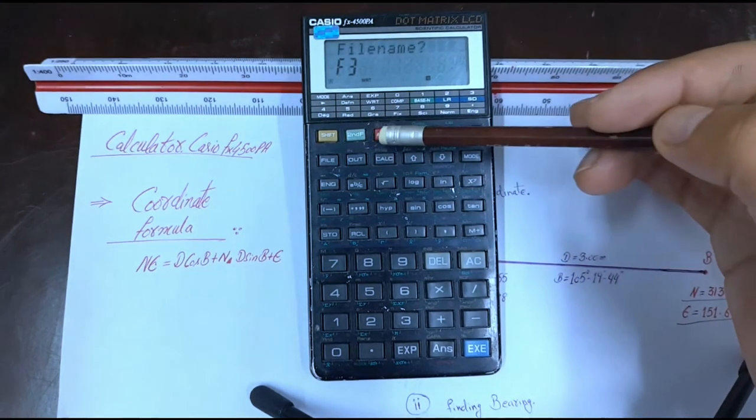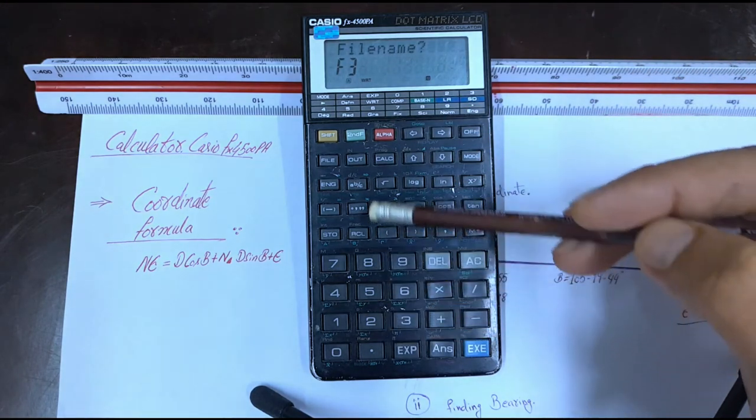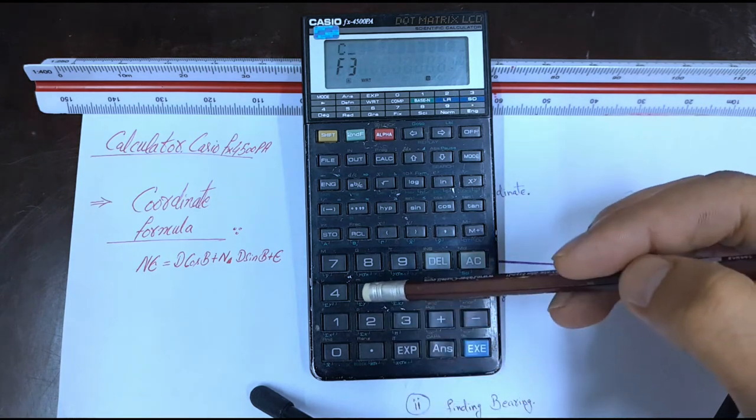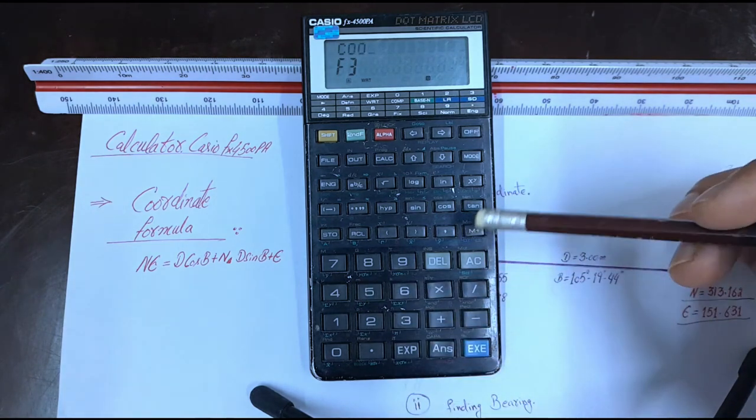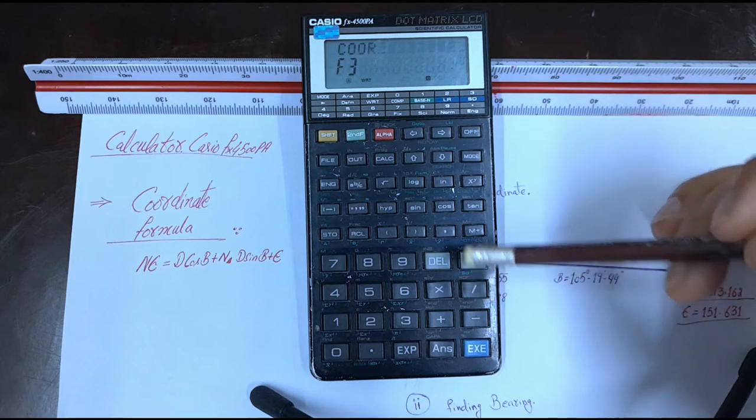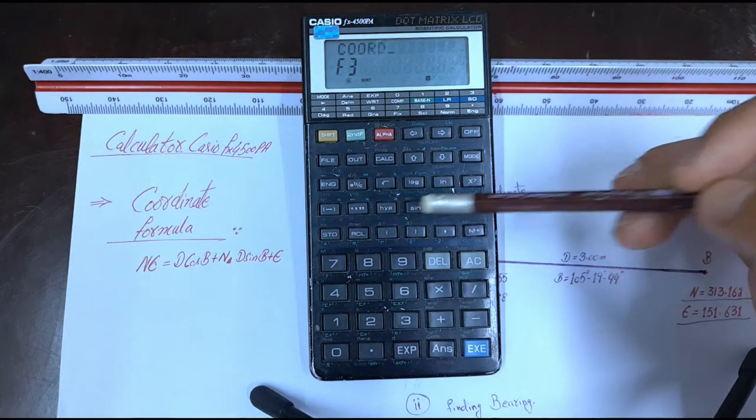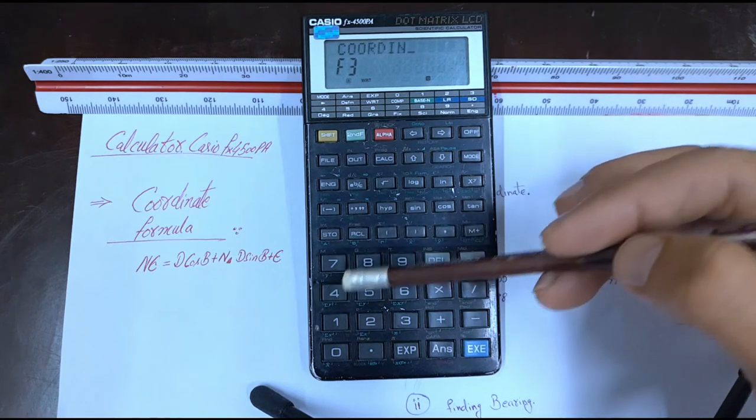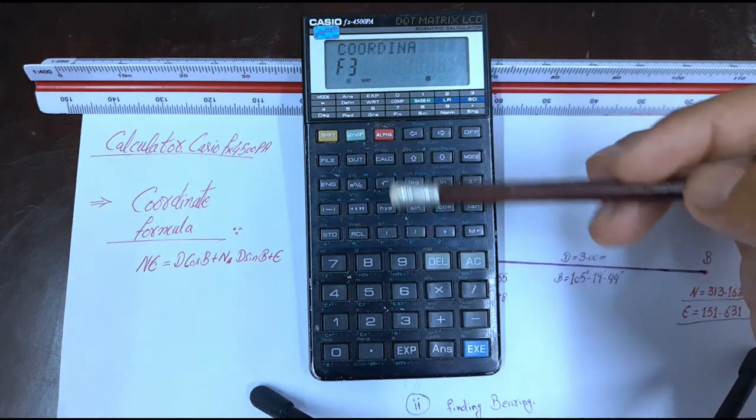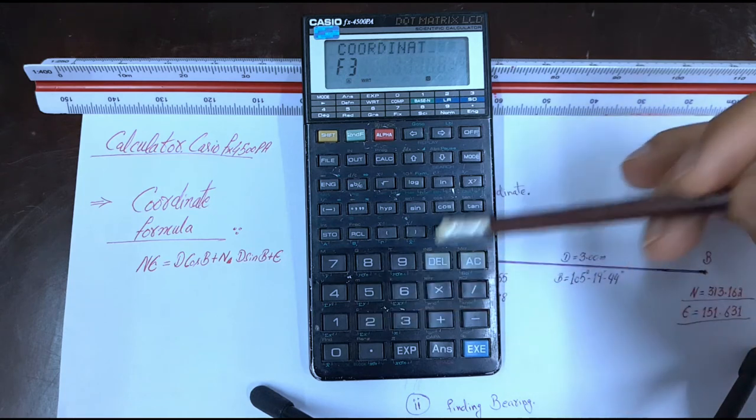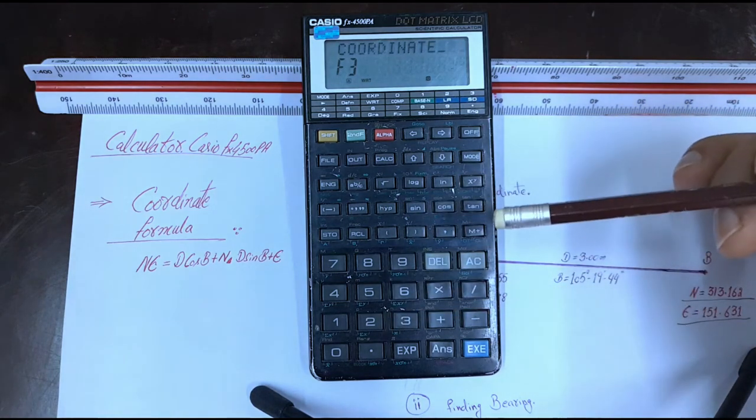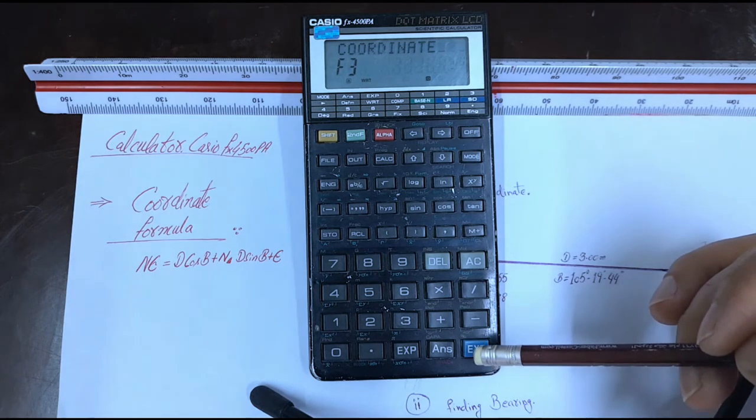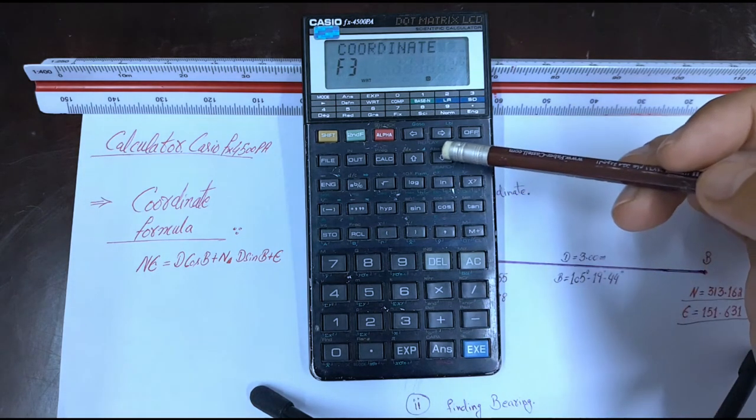Shift alpha: C, O, R, D, I, N, A, T, E. Then EXE, down arrow.